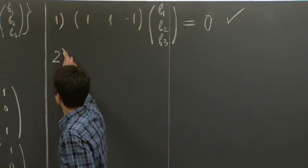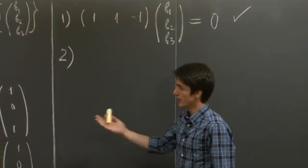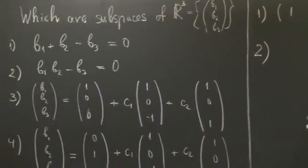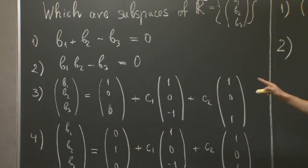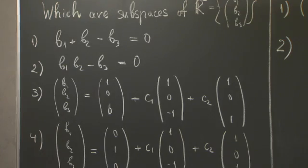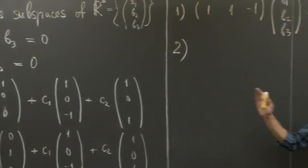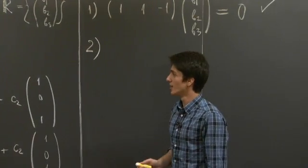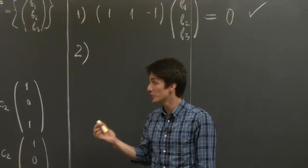What about the second one? Again, we are given a relation between b1, b2, and b3, but it's not linear. b3 is the product of b1 and b2. So your guts tell you that this shouldn't be a vector space, but we need to prove why.